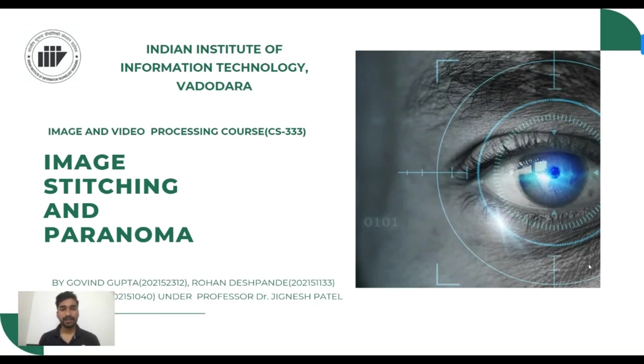I am Govind Gupta here with my teammates Vigil and Rohan for our IBP project, Image Stitching and Panorama. This project aims to address the challenges of image stitching in digital image processing. Image stitching is a technique that merges overlapping photos to create a panoramic scene. The solution is developed using Python and OpenCV and is designed to handle variations in angles, viewpoints, scale, perspective, and capturing devices.